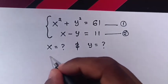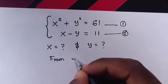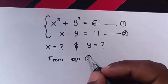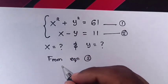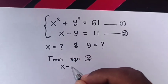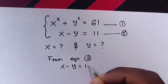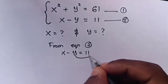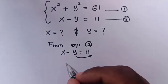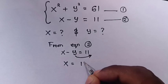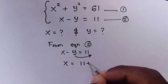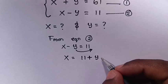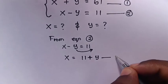Now, from equation 2, which is x minus y is equal to 11, we take negative y to the right side, so x will be equal to 11 plus y. We let this be equation 3.